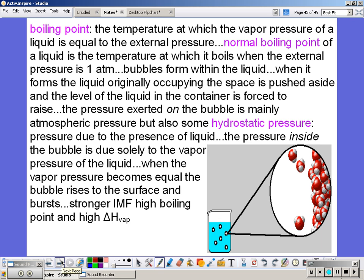Boiling point is the temperature at which the vapor pressure of a liquid is equal to the external pressure. Normal boiling point of a liquid is the temperature at which it boils when the external pressure is 1 atm. So we have bubbles that form within the liquid. If we look at our beaker, our beaker has bubbles. If we look at a single bubble, that would be the space here, and then this would be the surface or the water that's surrounding that bubble. When it forms, the liquid originally occupying that space then is pushed aside, and the level of the liquid in the container is forced to rise. The pressure inside the bubble is due solely to the vapor pressure of the liquid. When the vapor pressure becomes equal with the atmospheric pressure, the bubble rises to the surface and then bursts. So we don't see bubbles coming off of the surface of the liquid, because when it reaches the surface, the bubble bursts, and the gas goes into the atmosphere.